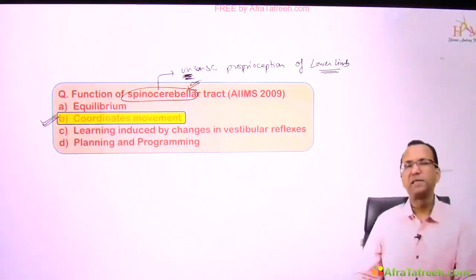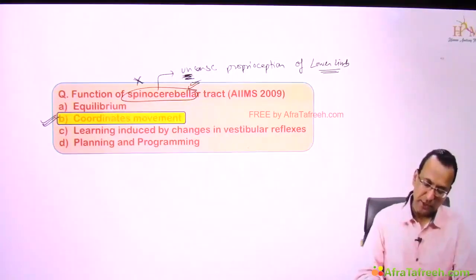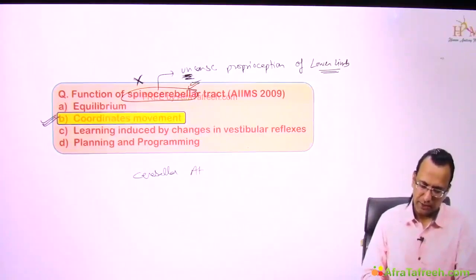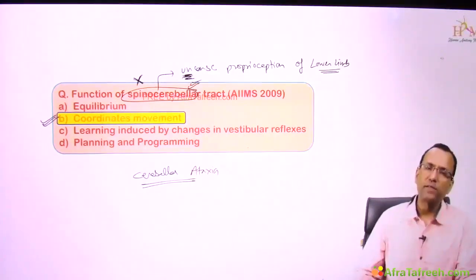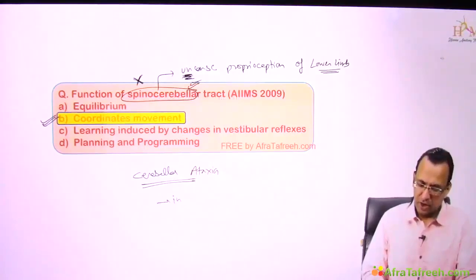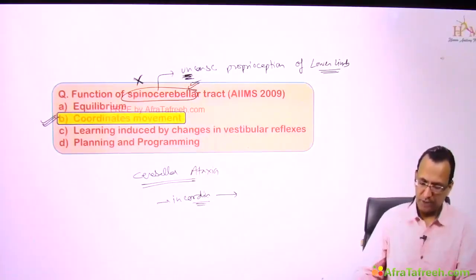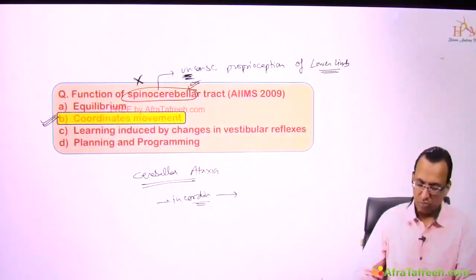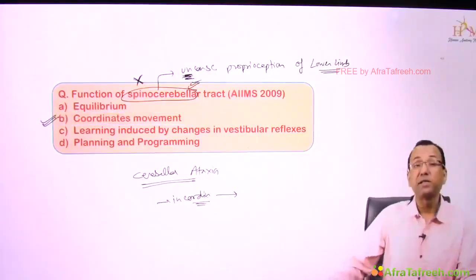If the spinal cerebellar tract is damaged, there will be cerebellar ataxia and incoordination — the patient is not walking in a straight line. The answer remains choice B: coordination of voluntary motor activity. Look at this ballet dancer — coordination of voluntary motor activity is unique and requires the cerebellum. You need basal ganglia for planning and the pyramidal system for execution, but cerebellum for coordination.